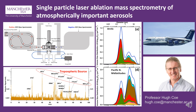The idea is to hit single particles with an excimer laser, having been identified that the particles are there using two infrared lasers. So we're able to size them, then ablate and ionize them, and extract those ions into both the positive and the negative S-shaped time-of-flight mass spectrometer.